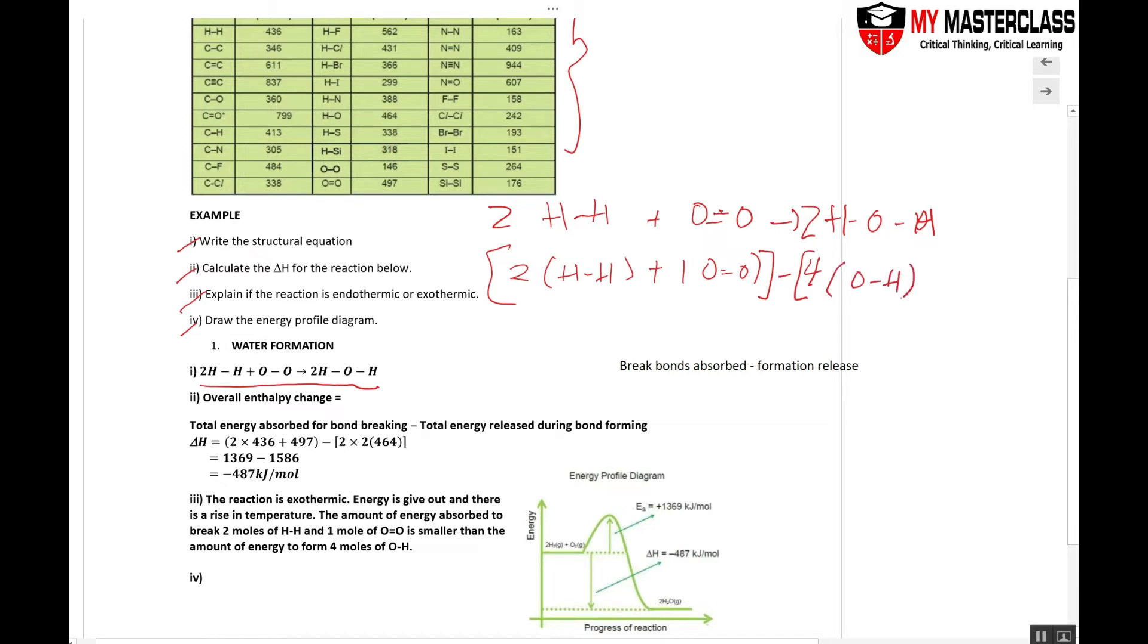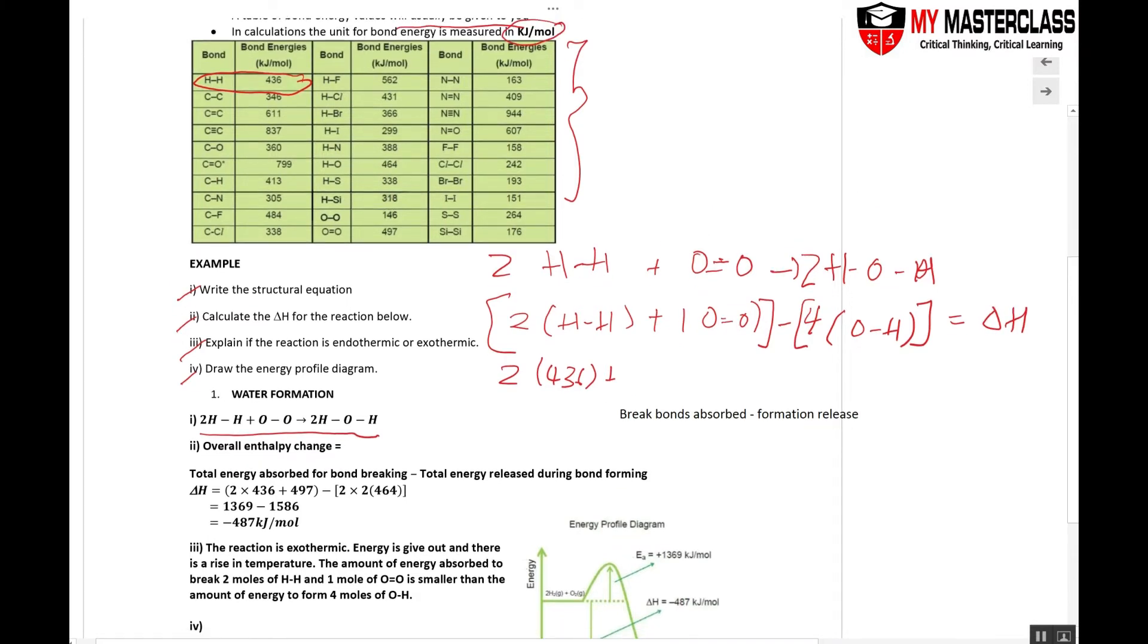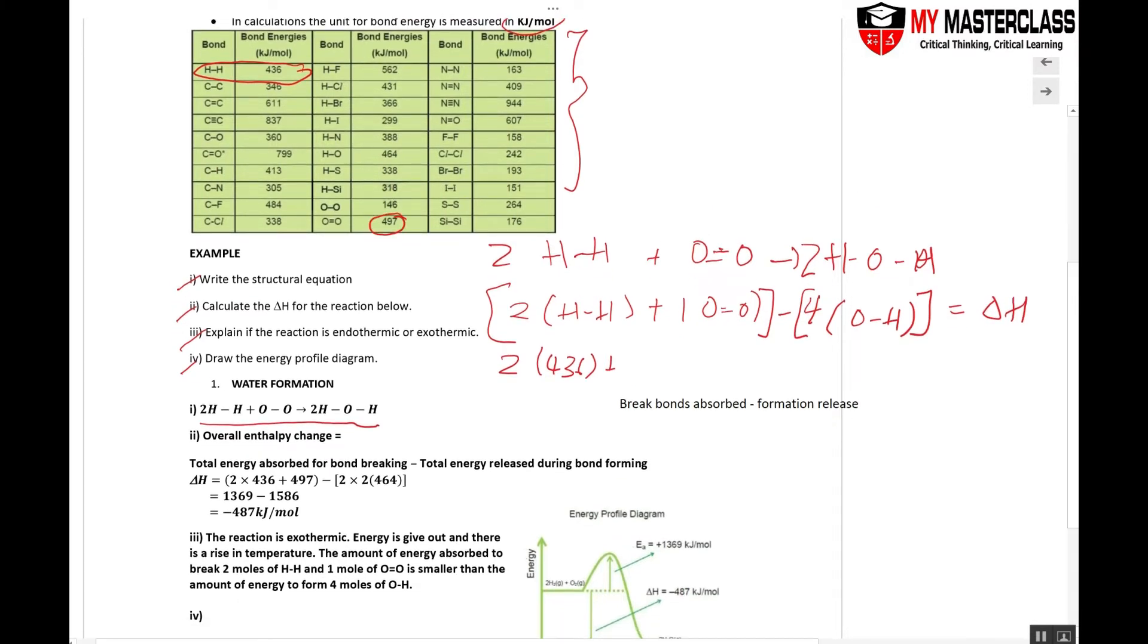So calculate the delta H of the reaction. This one will give me the delta H. So use this table, two times of 436. So let's look at this. HH single bond is over here. Use the table. Use the table and plug in the values.